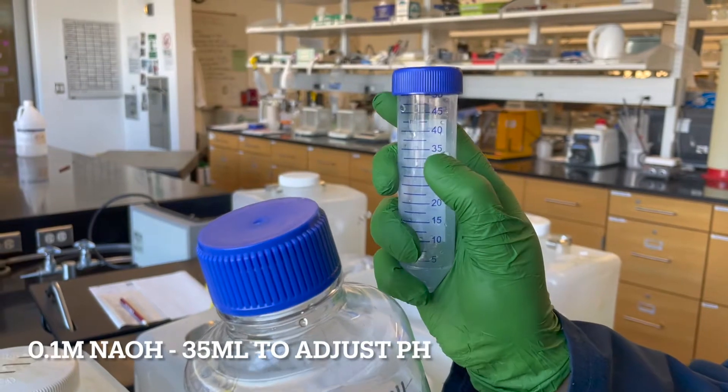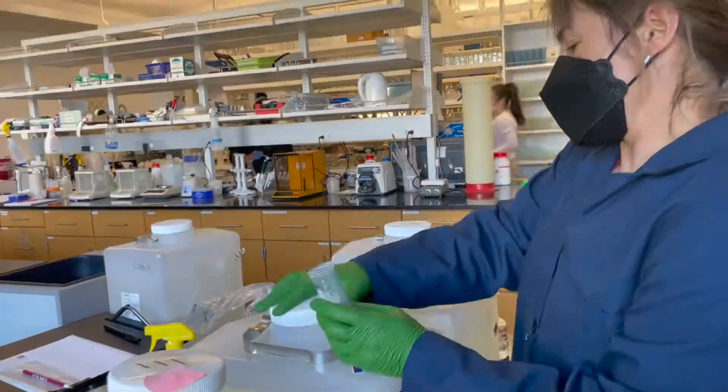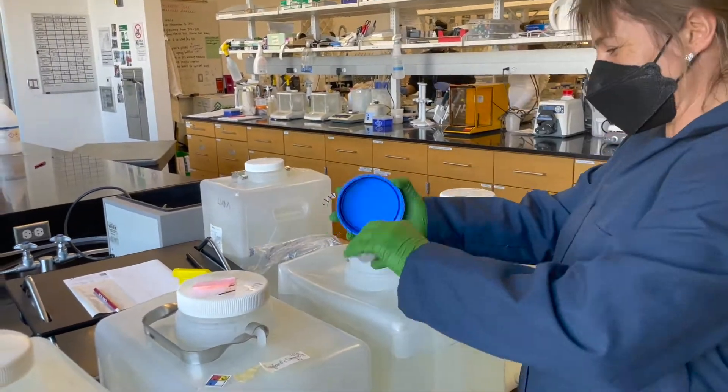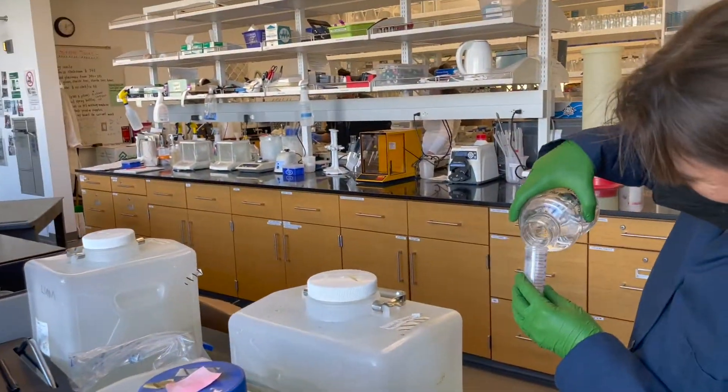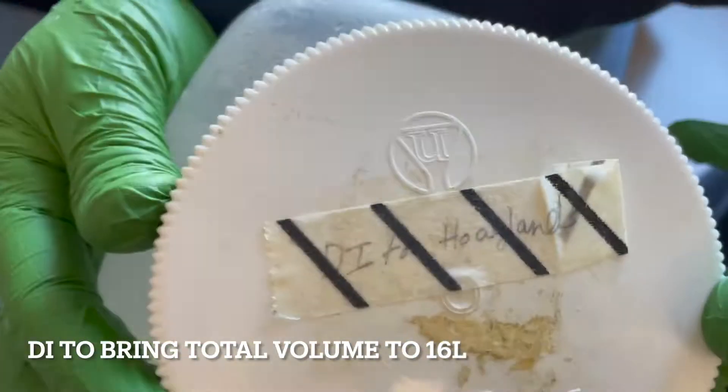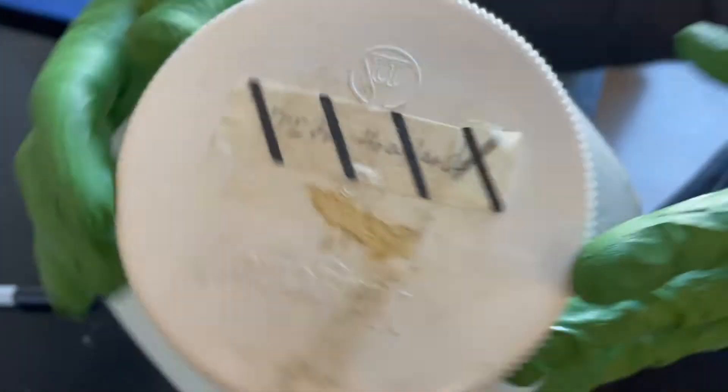Once you've added all the ingredients, it's important to adjust the pH. Hoagland's solution requires a pH range between 5.6 to 6. After all the ingredients are added, remember that you need to bring the total volume to 16 liters with DI water.